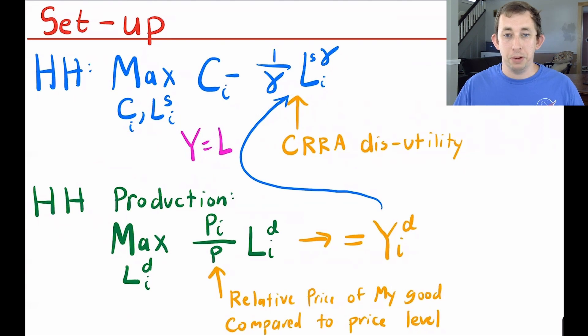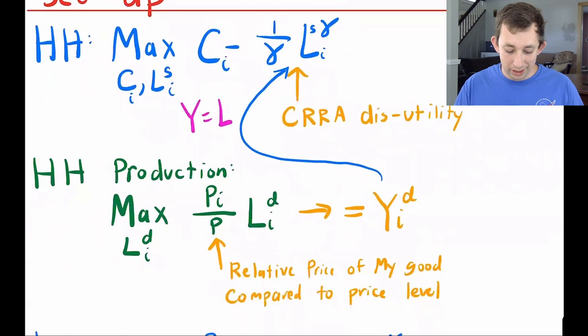Now on the production side of this problem, what we have is we are choosing again the amount we want to work on producing that good. How much of that good we get to sell is going to be based on the relative price level. So this is our price level compared to the overall price level, which we don't know, times that y equals l. So I just made the substitution and called it l here instead of y. But again, we know in the background that our labor demand is equal to our output demand.